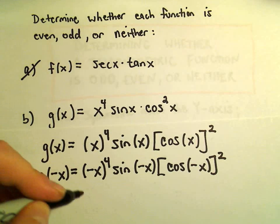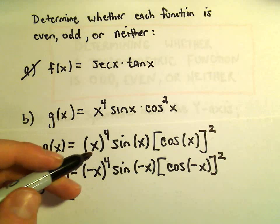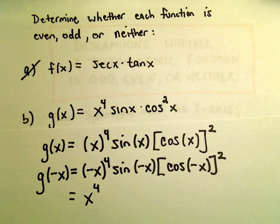Negative x to the fourth, if you take a negative one and raise it to an even power, that'll give us positive one. We'll just be left with the x to the fourth.